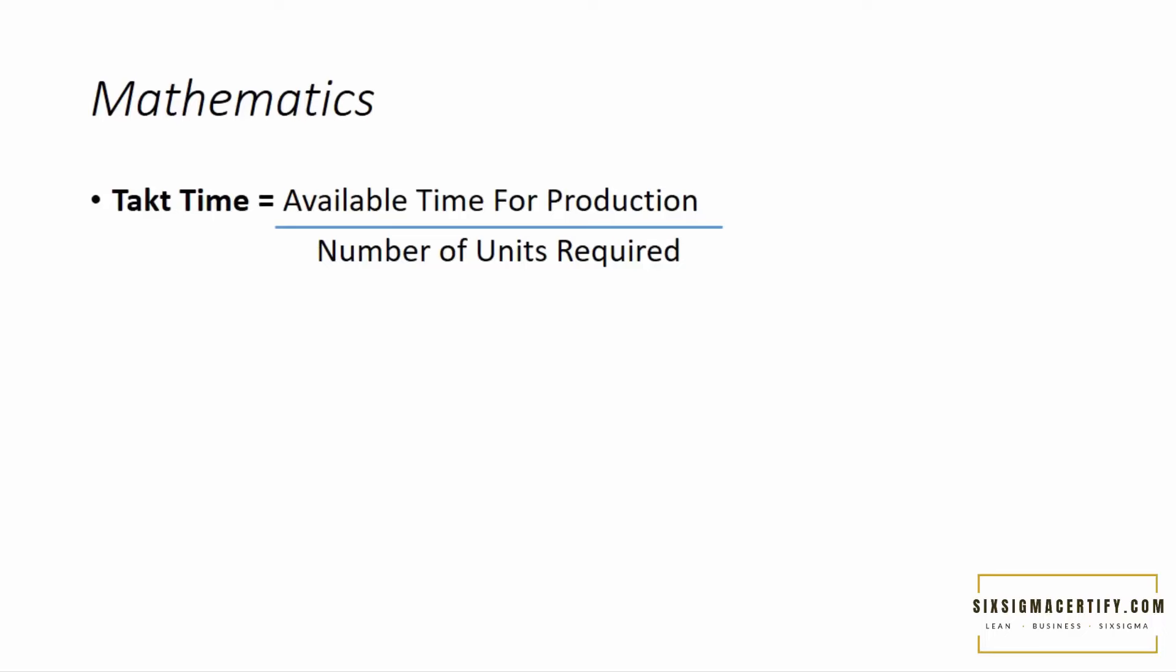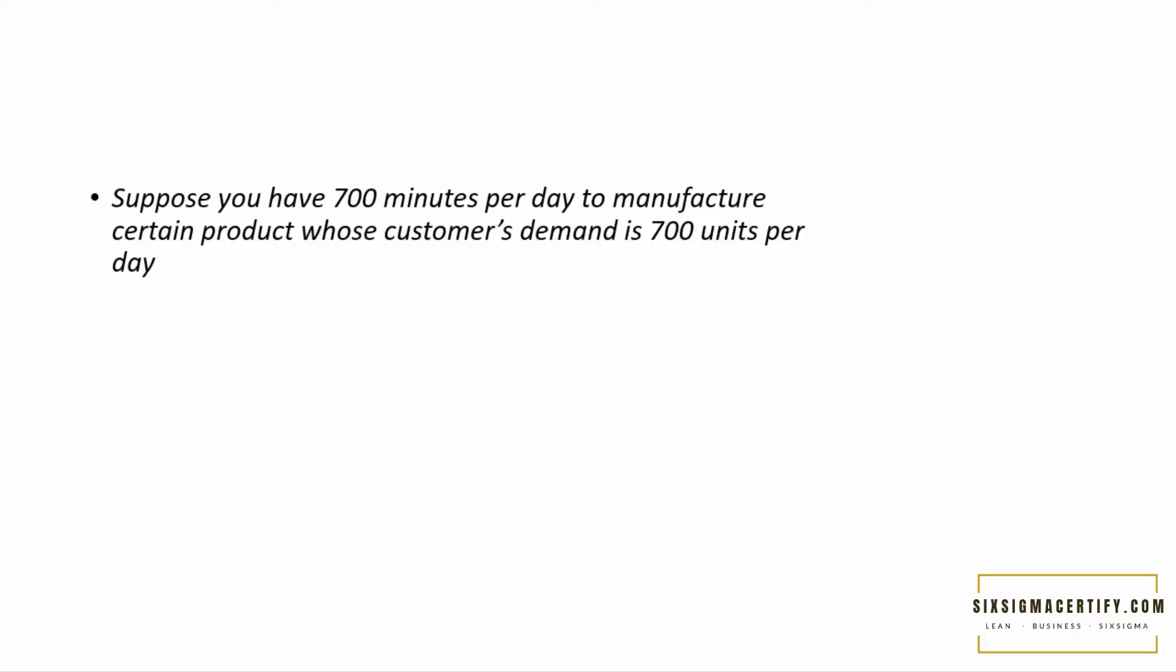Mathematically, takt time is the ratio of available time for production by number of units required. We will study the example in the next lecture using a simulated case study to understand takt time more properly. But just for understanding, suppose if you have 700 minutes per day to manufacture a certain product whose customers demand is 700 units per day, what will be your takt time? Your takt time will be 700 divided by 700 which is 1. You have 1 minute to produce a unit in order to satisfy the customers demand. So the production pace should be 1 minute to produce a single unit of the product.